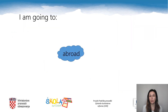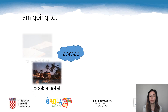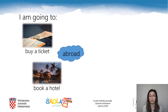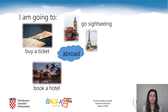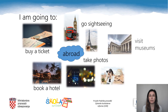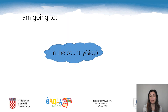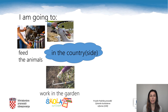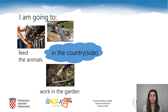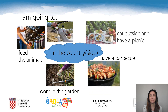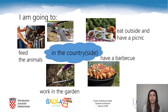If I'm going to spend my summer abroad, I'm going to book a hotel, buy a ticket — for example, a bus ticket or a plane ticket — go sightseeing, take photos, and visit museums and art galleries. If I'm going to spend my summer in the countryside, I'm going to feed the animals, work in the garden, have a barbecue, eat outside and have a picnic.